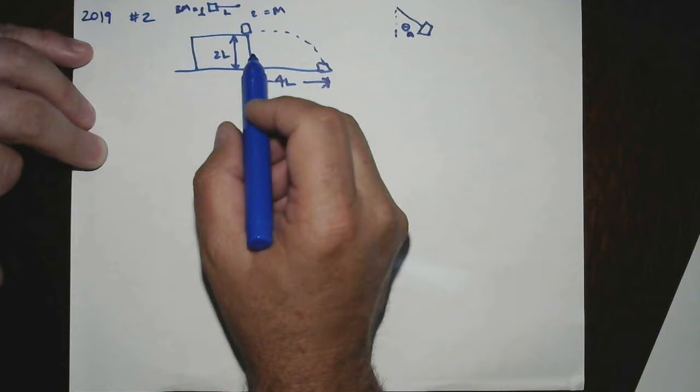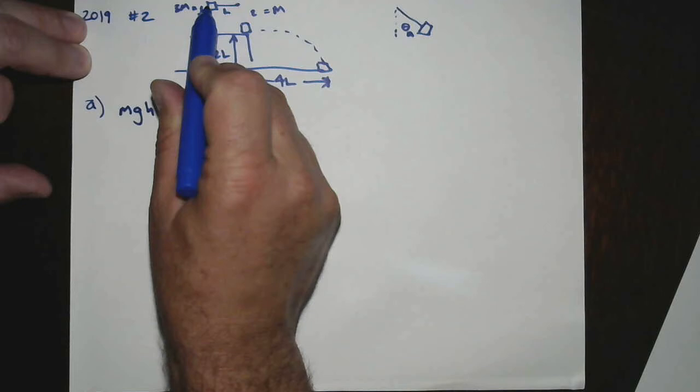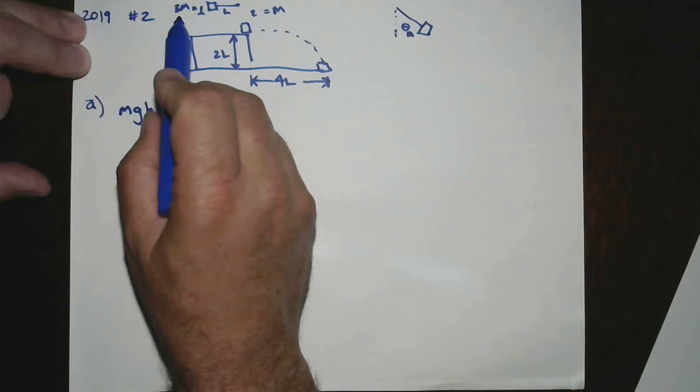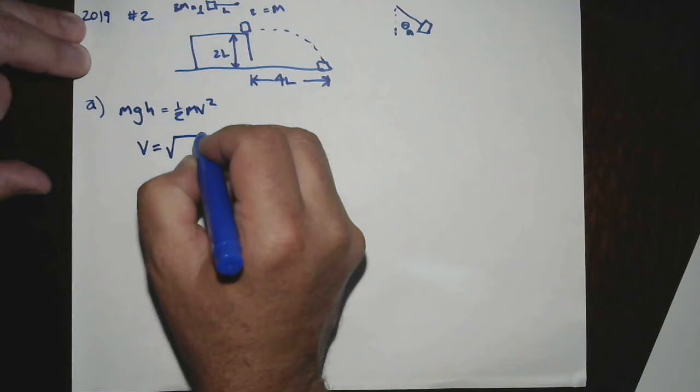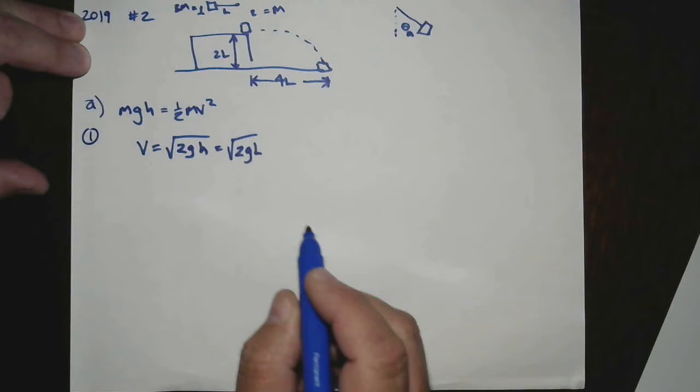So the first thing we need to figure out is what is the speed of block one at the bottom of its swing just before it hits block two. And that's part A. And that's going to be fairly easy. I would use energy, the MGH, the potential energy that this block number one has by being up here, turns into kinetic energy. One half Mv squared. Does not matter that the actual mass is 3M because mass cancels out. So V is going to be the square root of 2GH. However, the height that this thing is up is actually L. So the square root of 2GL should be the correct answer.